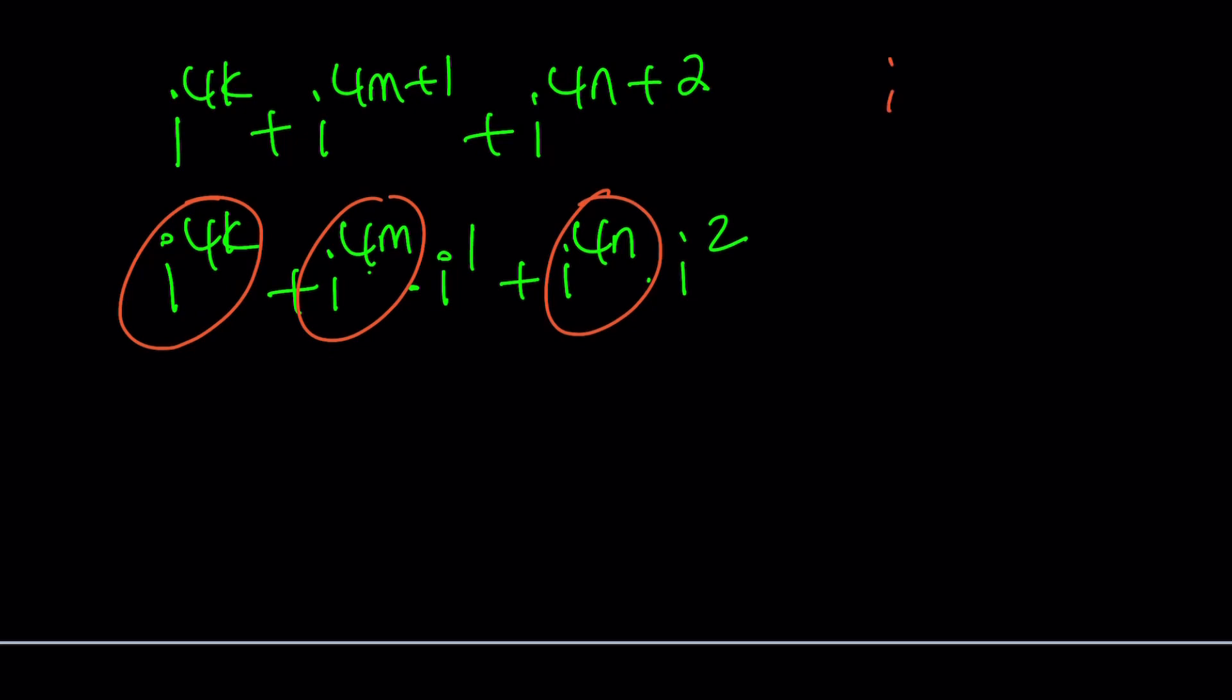These are all 1s, right? Because when the exponent is a multiple of 4, like i to the 4, i to the 8th, i to the 12th, they're all going to equal 1. So we can write this as 1 plus 1 times i to the first power, which is i, and then 1 plus 1 times i squared, which is negative 1. 1 and the negative 1 cancel out, and we end up with i.